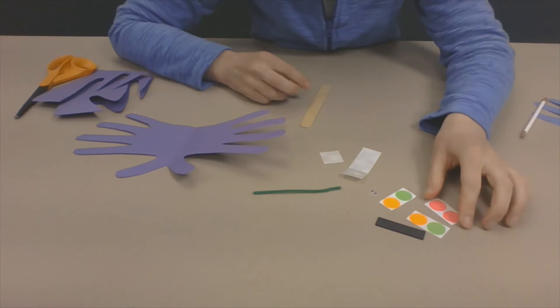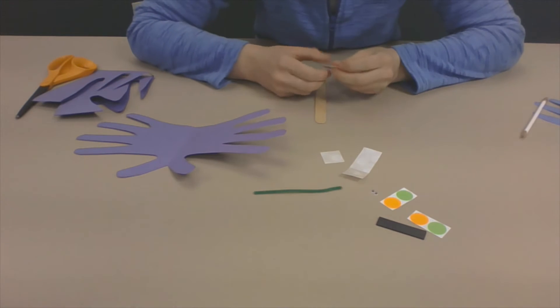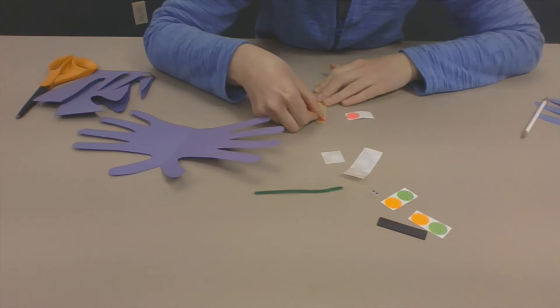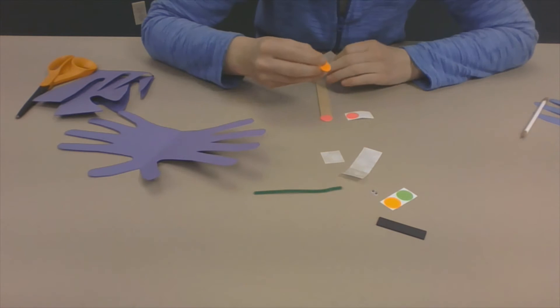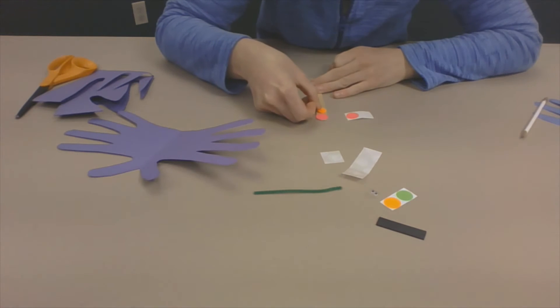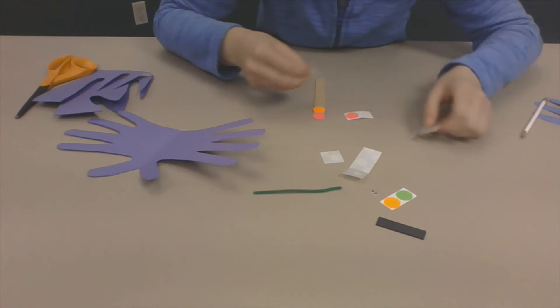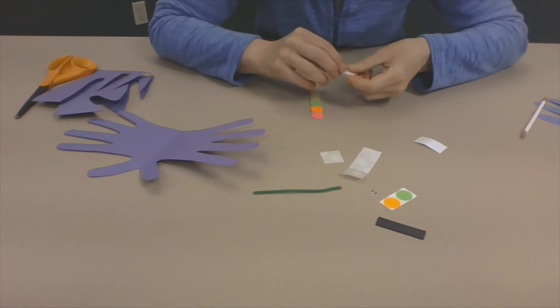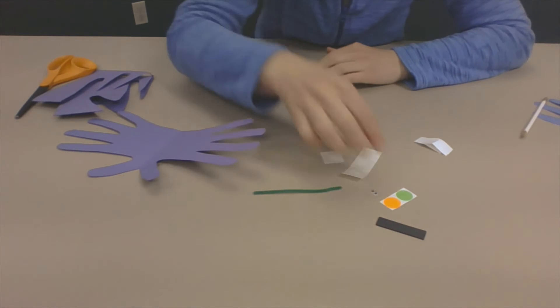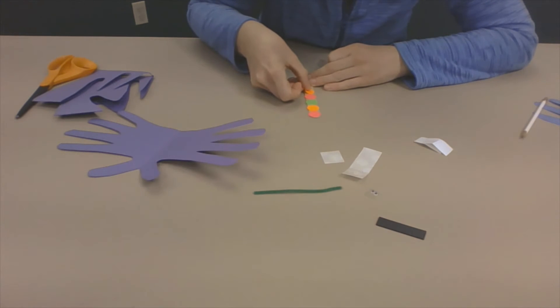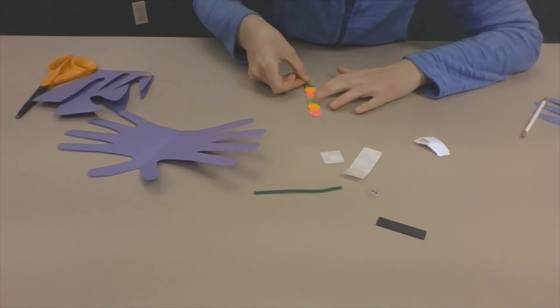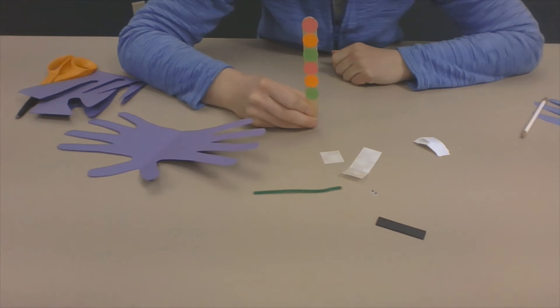Okay and then next what I'm gonna do is I'm gonna decorate my butterfly. So the body of my butterfly right here is my popsicle stick. So I'm gonna take my stickers and decorate my popsicle stick. I'm gonna use one as its face and then I'm gonna try to make a pattern so I'm gonna go pink, orange, green, and then what's next, pink again and then orange and then green. Okay so you can see my popsicle stick is all decorated.